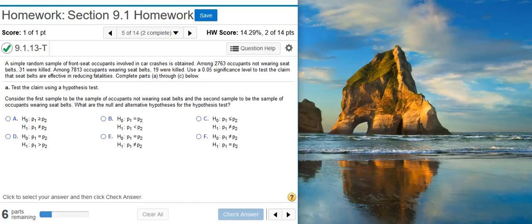Here's our problem statement. A simple random sample of front seat occupants involved in car crashes is obtained. Among 2,763 occupants not wearing seatbelts, 31 were killed. Among 7,813 occupants wearing seatbelts, 19 were killed. Use a 5% significance level to test the claim that seatbelts are effective in reducing fatalities. Complete Parts A through C below.